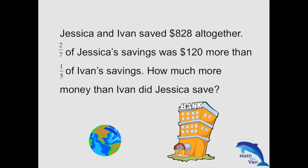One thing to take note of — first thing first — is that those two fractions are referring to different bases: that of Jessica's and that of Ivan's. So these two fractions cannot be added or subtracted.